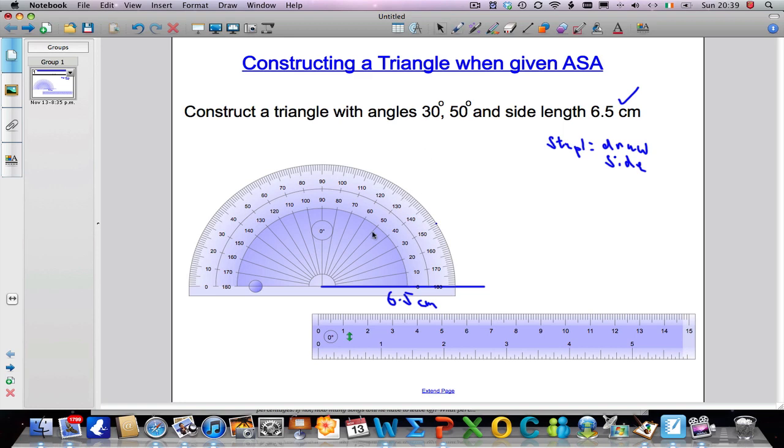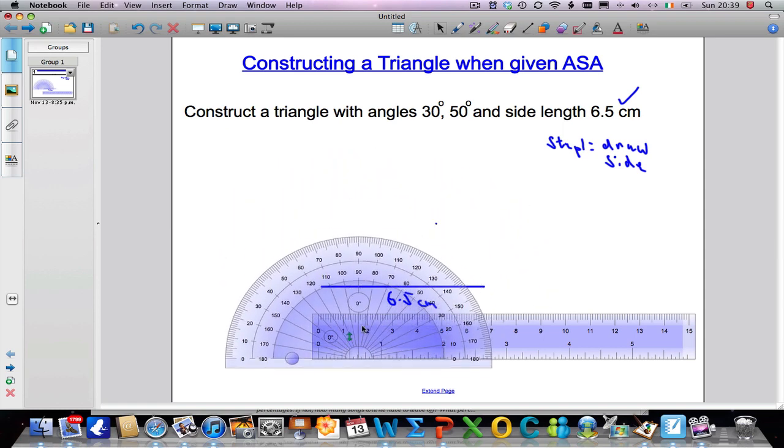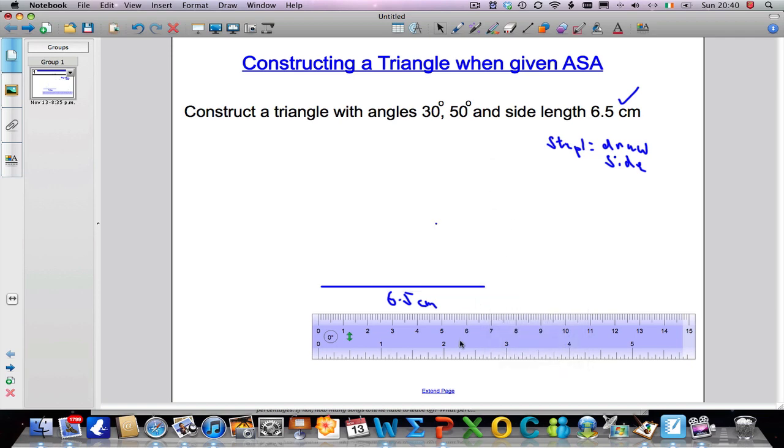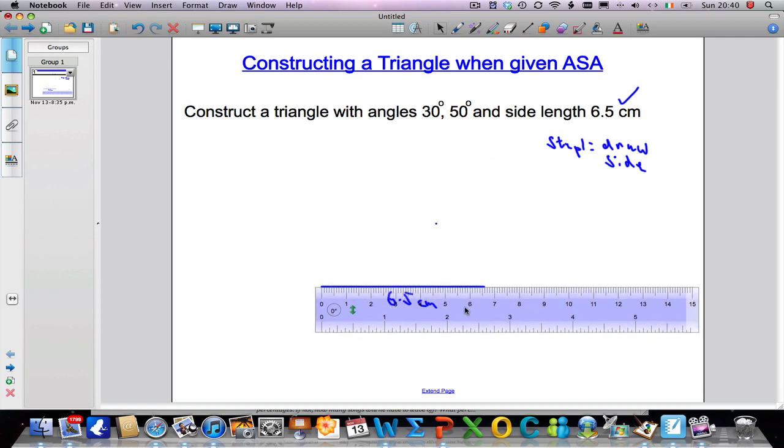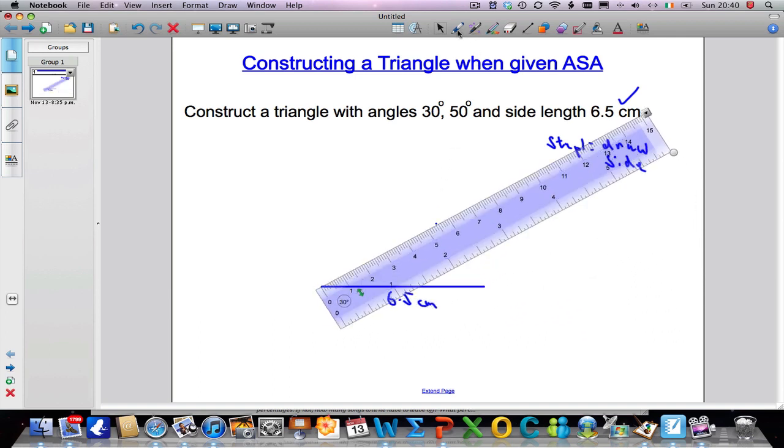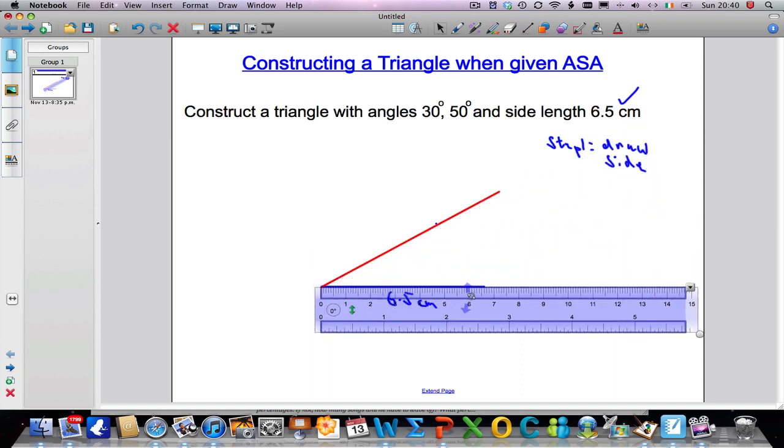Now I need to draw a straight line connecting that side with that angle. So let's just get rid of my protractor for the moment. Take my ruler and I want to swing it around so that it goes directly through my line. I am going to change colours here just so we can clearly see the steps. And I draw a straight line through that point that I have marked. It doesn't matter how long, just make it long enough.